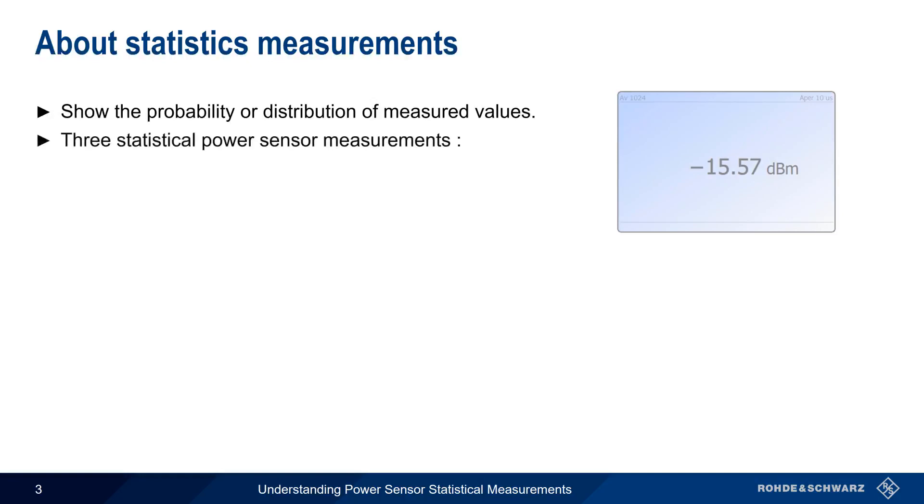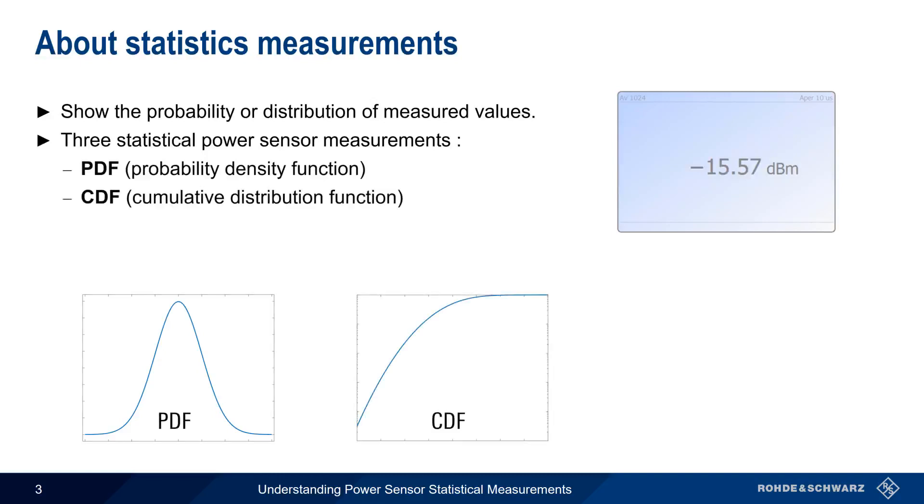Power sensors support three different statistical measurements, namely the Probability Density Function, the Cumulative Distribution Function, and the Complementary Cumulative Distribution Function. This presentation will explain, with as little mathematics as possible, what these statistical measurements are and how they're used.